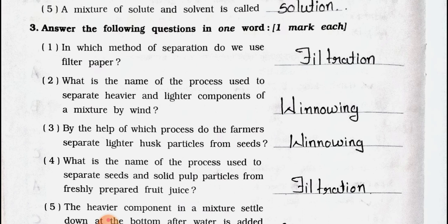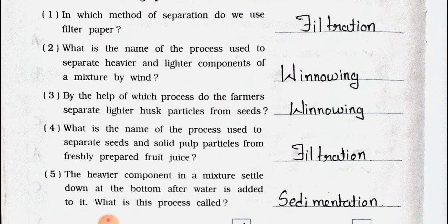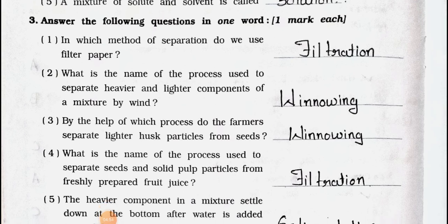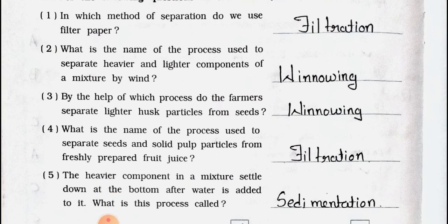Number one: In which method of separation do we use filter paper? Answer is filtration. Number two: What is the name of the process used to separate heavier and lighter components of a mixture by wind? Answer is winnowing. Number three: By the help of which process do farmers separate lighter husk particles from seeds? Answer is winnowing.